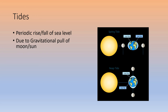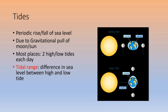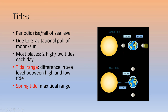Tides are due to the gravitational pull of the moon, but also the sun. Even though the sun has much larger mass, it's much farther away, so its effect is not as large as the moon's. In most places we have two high tides and two low tides each day, about 12 hours apart. Tidal range is the difference in sea level between low tide and high tide. Spring tides are our maximum tidal ranges, occurring when the sun and moon are pulling in the same plane.